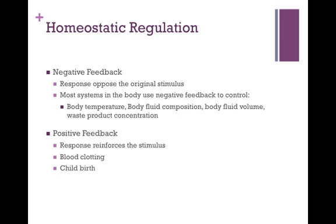There are two different types of homeostatic regulation: negative feedback and positive feedback. In negative feedback, the response opposes the original stimulus. Most systems in the body use negative feedback to control things like body temperature, body fluid composition, body fluid volume, and waste product concentration. Positive feedback is more rare in the body, and it is a response that reinforces the original stimulus. Two examples are blood clotting and childbirth.